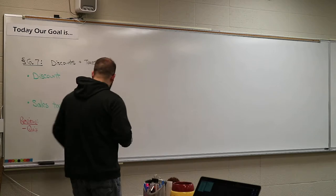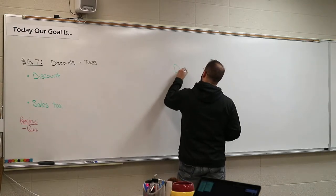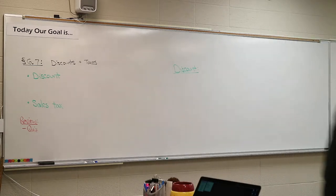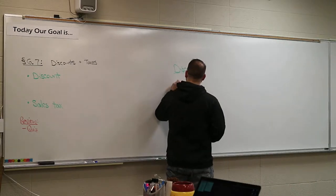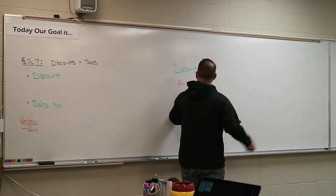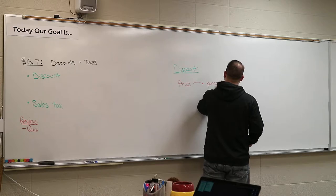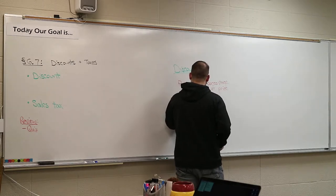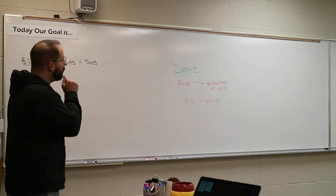All right, let's talk about discounts first. A discount is when you have a price of an item and a percentage that lowers the price — it is a lower price on an object. They're going to take a percentage of the actual price and subtract it off. So it's: price minus whatever that savings is.